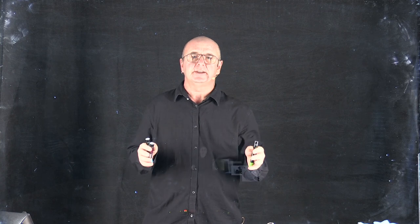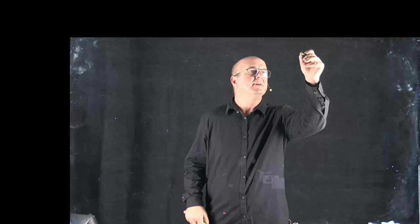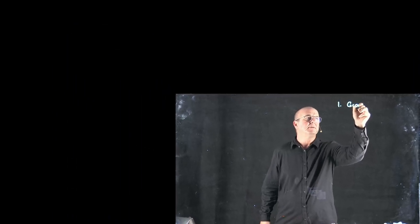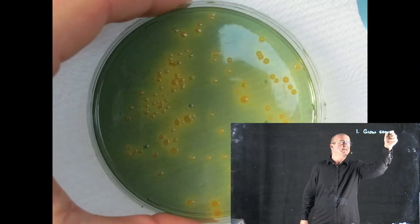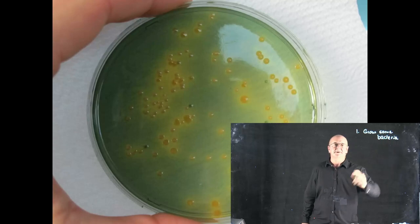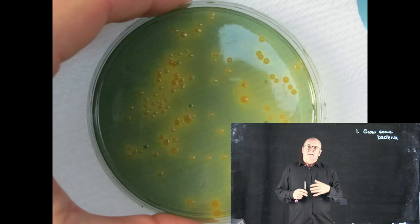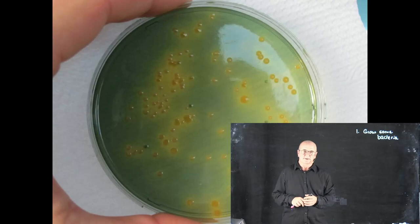So how do we actually generate a genome sequence? The first thing we have to do is grow some bacteria. This plate that my student is holding here has some colonies of Vibrio on it. You can either grow them on a solid plate like this or you can grow them in liquid culture.